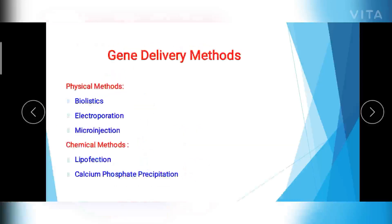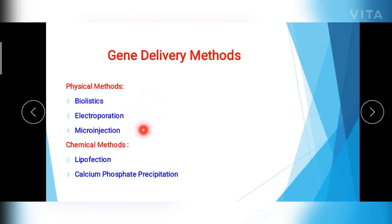The direct gene delivery methods are of two types: one is physical method and the second one is chemical methods. In the physical methods, we will be discussing about three types: biolistics, electroporation, and microinjection. Whereas in chemical methods, you will be studying about lipofection and calcium phosphate precipitation methods.